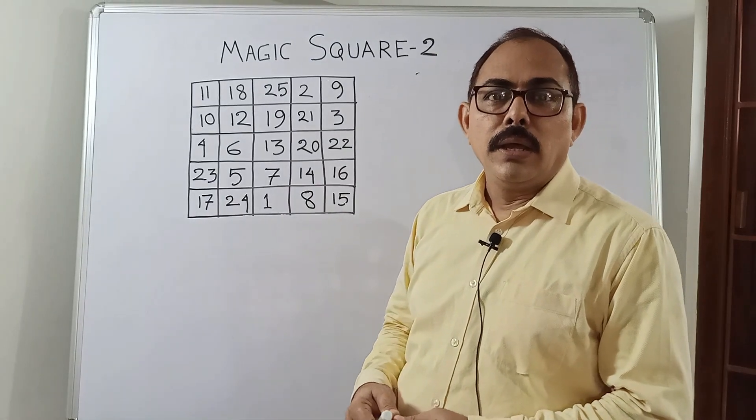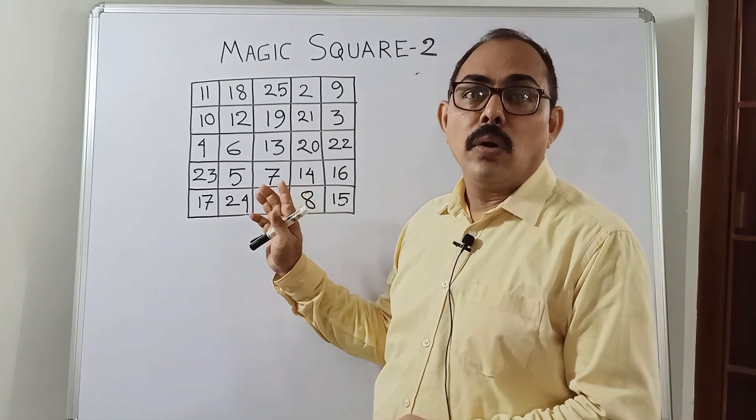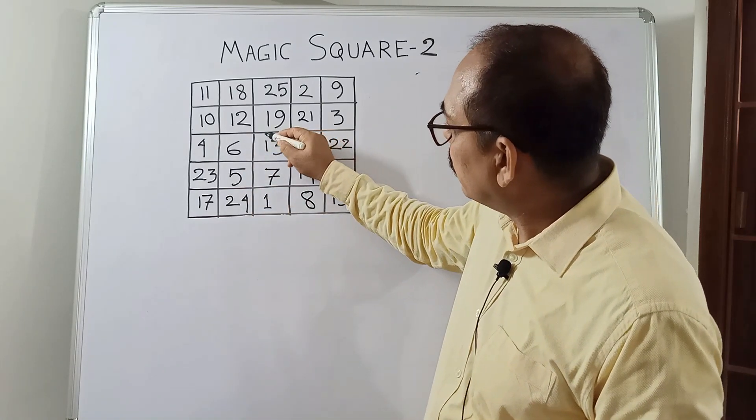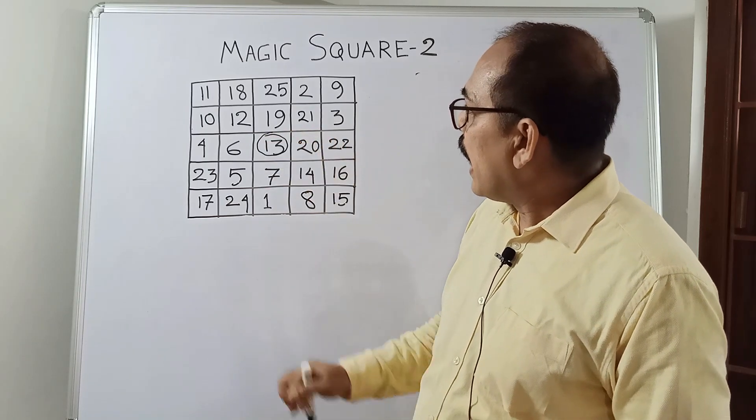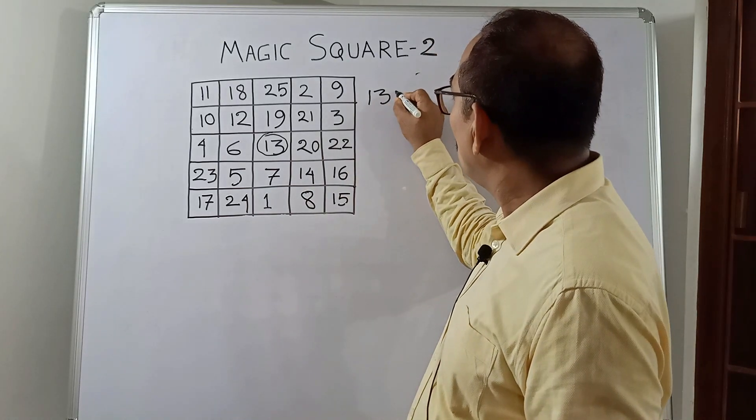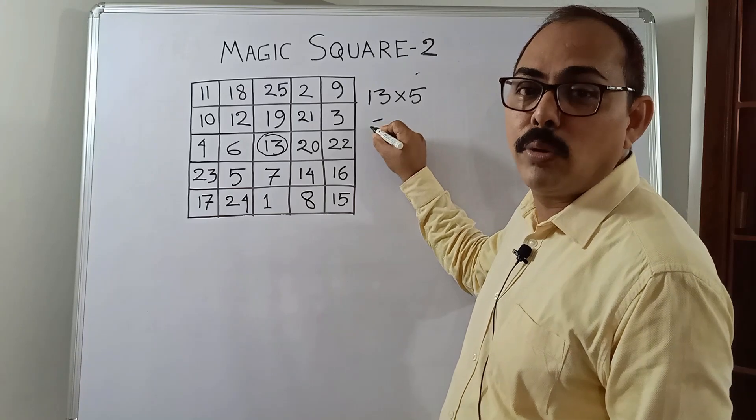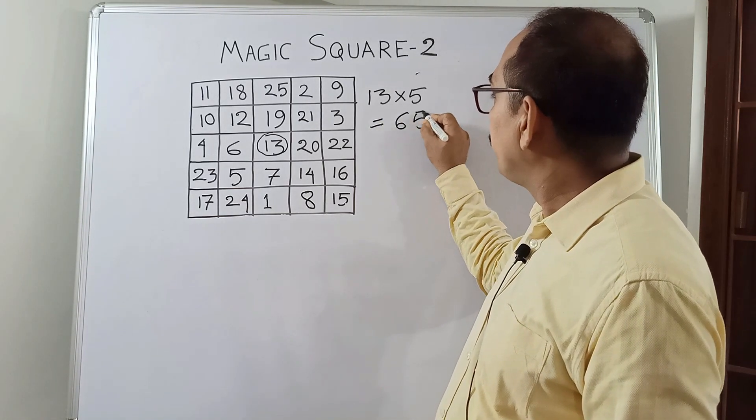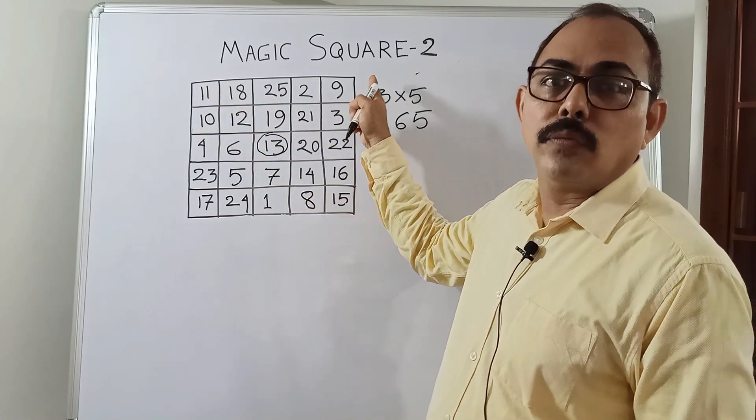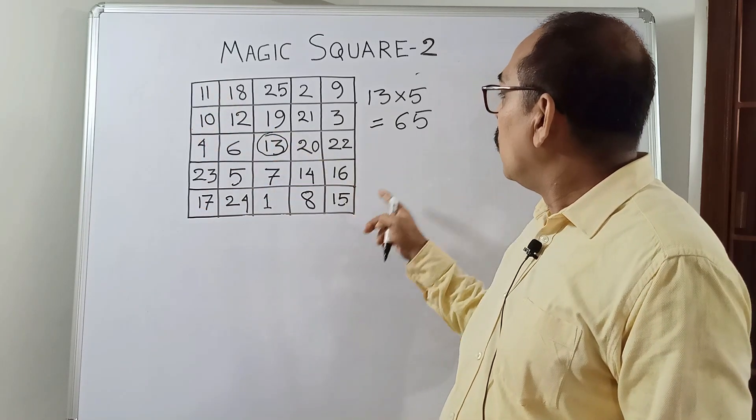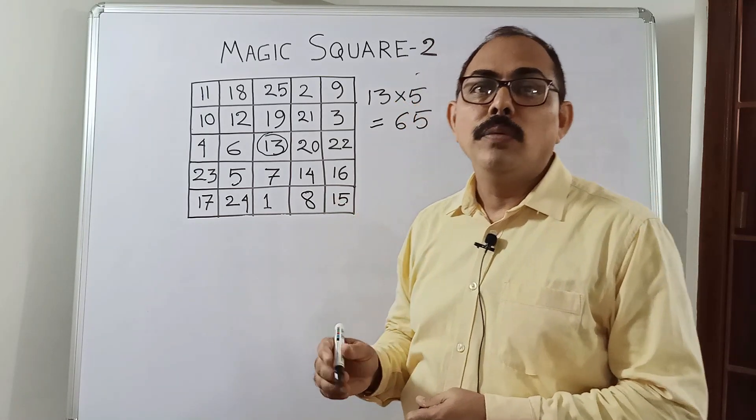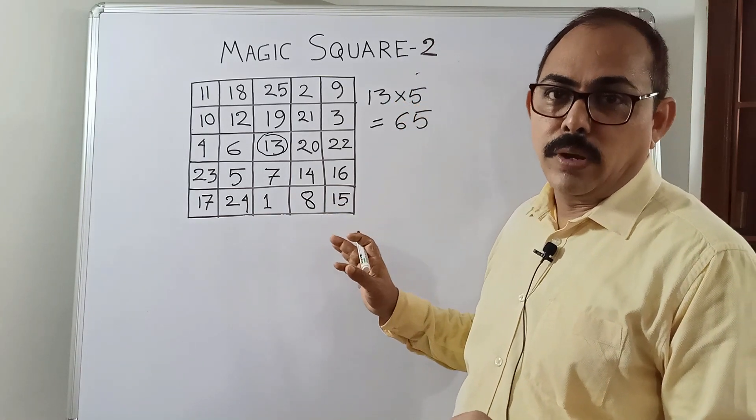Now, one more thing. Let us see one property of odd number magic square. What will be the middle number, that is 13 here? And the number of rows or the number of columns is 5. So 13 into 5, what is the result? 13 into 5 equals 65. You see, always the sum of the numbers of row or column or diagonal will be 65. It is one very interesting property of odd number magic square.